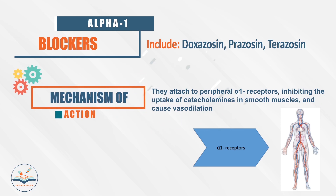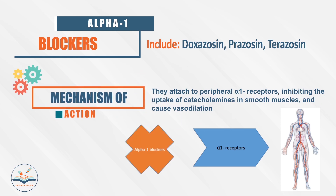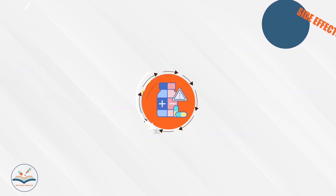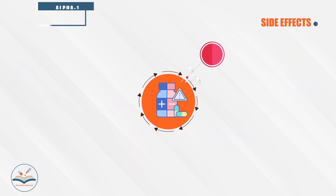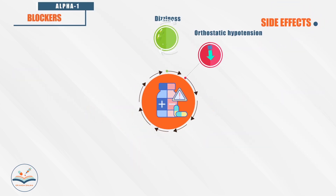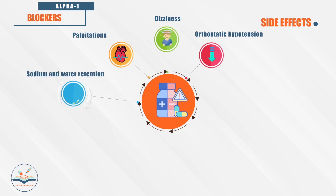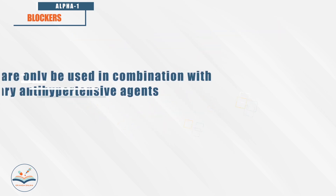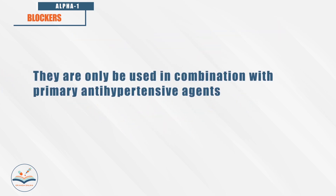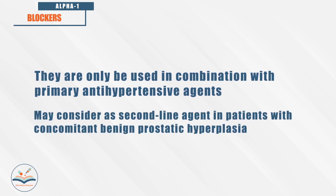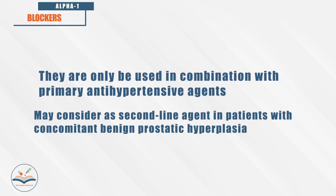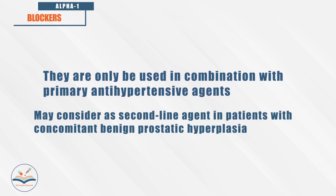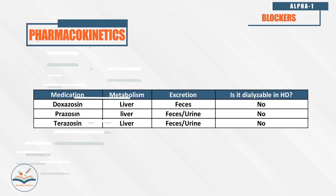Alpha-1 blockers, like prazosin and terazosin, attach to peripheral alpha-1 receptors, inhibiting uptake of catecholamines in smooth muscles and causing vasodilation. Side effects include orthostatic hypotension, dizziness, palpitations, and sodium and water retention. They are only used in combination with primary antihypertensive agents and may be considered as second-line agents in patients with benign prostatic hyperplasia.